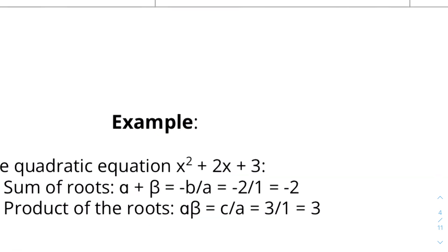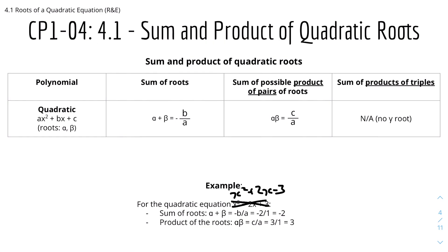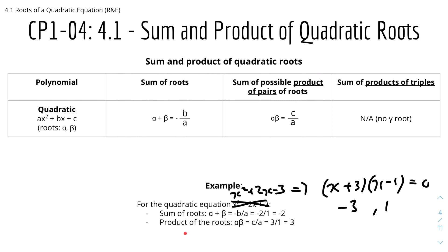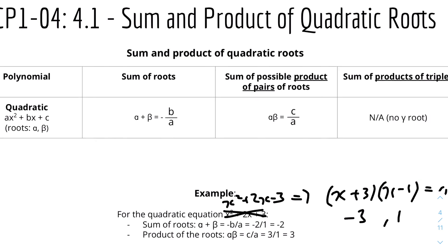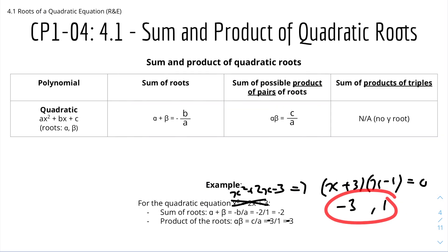Here is a quick example. The equation is x squared plus 2x minus 3, which factorizes into (x plus 3)(x minus 1). The roots are minus 3 and 1. Using the root of polynomial theory, the sum of roots alpha plus beta equals minus b over a, which is minus 2 over 1, giving minus 2 — and indeed minus 3 plus 1 equals minus 2. The product alpha times beta equals c over a, which is minus 3 over 1, giving minus 3 — and indeed minus 3 times 1 equals minus 3.